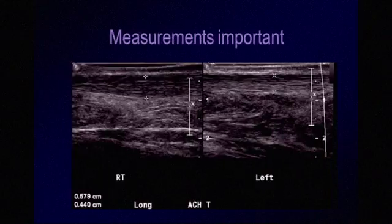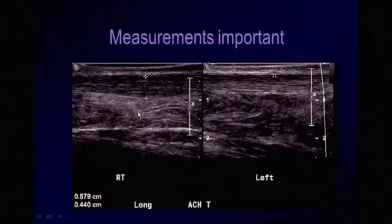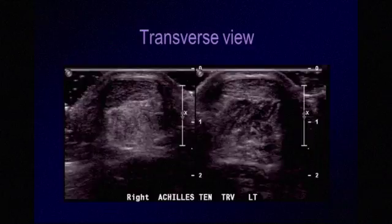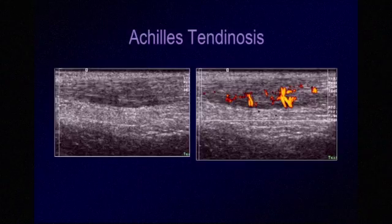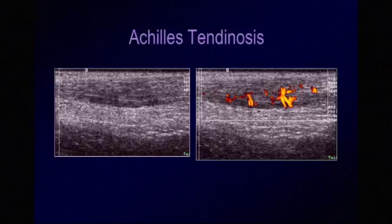Measurements can be useful when you're not sure if you're looking at pathology — you may see a difference with the unaffected side. Even very small measurement differences may be relatively significant. On the transverse view, a normal tendon has a football or ovoid shape and is uniformly hyperechoic, whereas the tendinotic tendon has focal thickening of the medial aspect, which is the more common location. With tendinosis, we may also find increased vascularity on power Doppler imaging. Always avoid compressing vessels with a heavy hand during the scan.